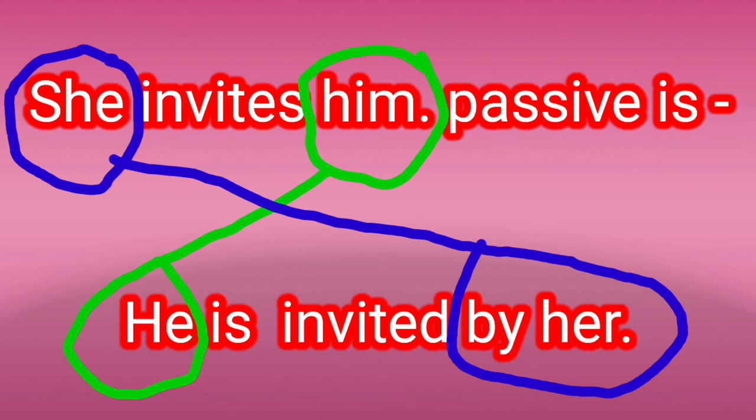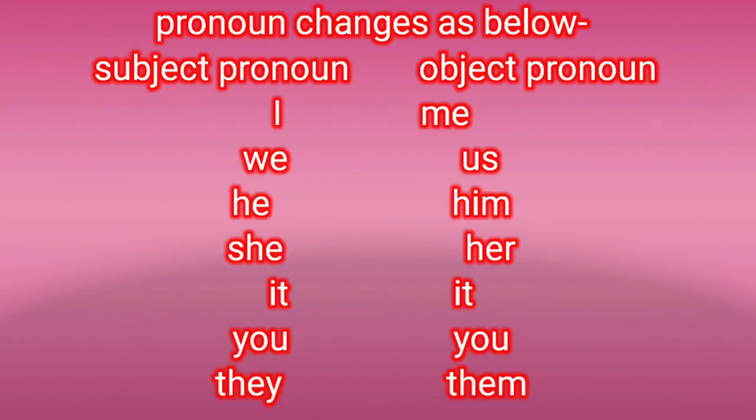When pronouns are involved, there is not only a position change but we also have to change the pronoun form. For example, 'she' changes to 'by her,' and 'him' changes to 'he.' Pronoun changes are as follows — subject to object: I/me, we/us, he/him, she/her, it/it, you/you, they/them.